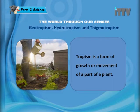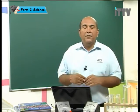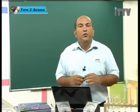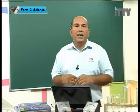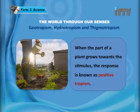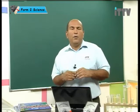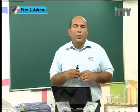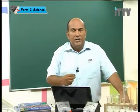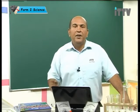Tropism is a form of growth or movement of a part of a plant. For example, if roots grow downwards, we say that is geotropism because the root is moving towards gravity. If the shoot moves towards light, we say phototropism. When a part of a plant grows towards the stimulus, the response is known as positive tropism. When the shoot grows towards sunlight, we say that is positive phototropism. When the root grows downwards towards water, we say that is positive hydrotropism.